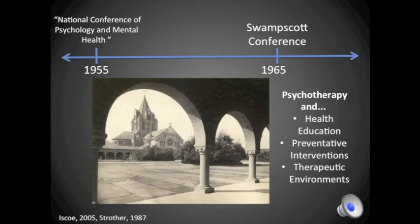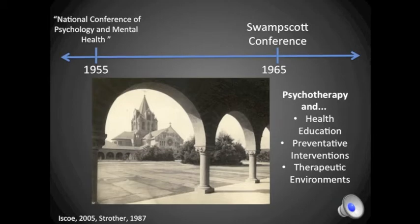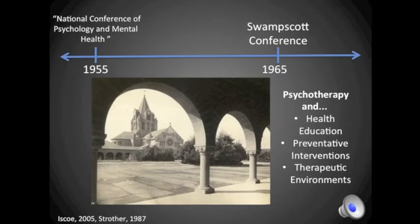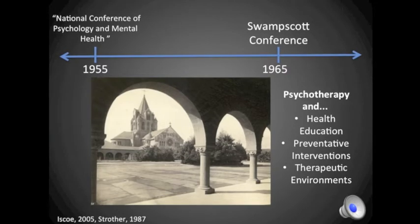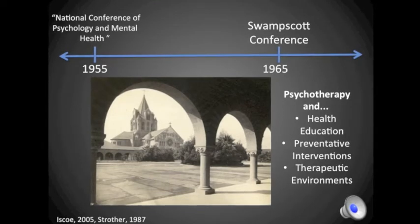To understand what took place at the Swampscott Conference, we must first consider what was happening in the field of mental health at the time. A medical model for treatment of mental illness persisted for much of psychology's early years. However, the field was also starting to place some value on psychotherapy and behavioral therapy. At this point in time, mental illness was still treated like a disease that should be dealt with on an individual level.